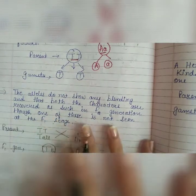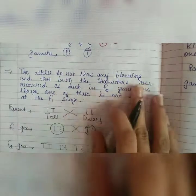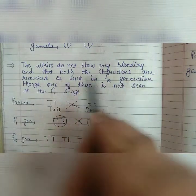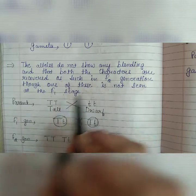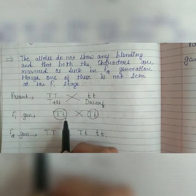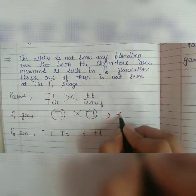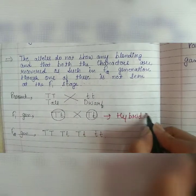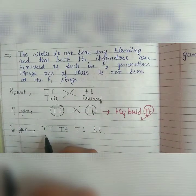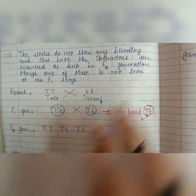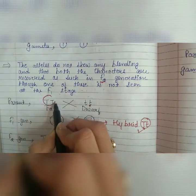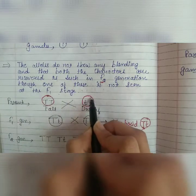Ab mono hybrid cross ka hum thoda sa overview lete hain. Jo alleles hain woh blend nahi karengi, and that both the characters are recovered as such in F2 generation. Mono hybrid cross me humne two parents liye the — ek tall aur ek dwarf. Ab F1 generation me hume hybrid mila tha jo ki tall tha, sirf tall tha, uska genotype Tt tha — T dominant hai toh yeh tall tha. But F2 generation me hume dwarf bhi mila tha.